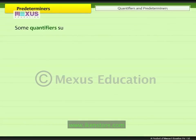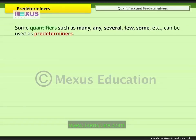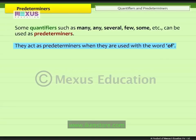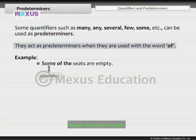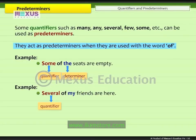Some quantifiers such as many, any, several, few, some, etc. can be used as predeterminers. They act as predeterminers when they are used with the word 'of.' For example, 'some of the seats are empty' — the quantifier 'some' appears before the determiner 'the.' Similarly, in 'several of my friends are here,' the quantifier 'several' appears before the determiner 'my.'